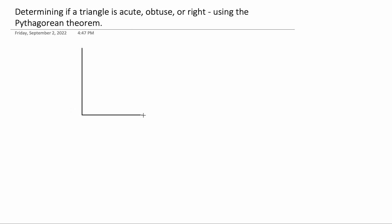We're going to take a look at how we can use the Pythagorean Theorem to tell whether a triangle is acute, obtuse, or right.